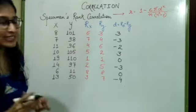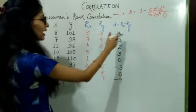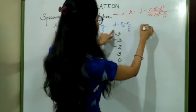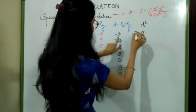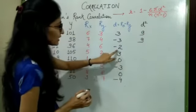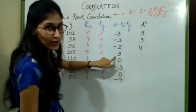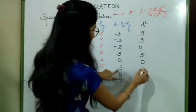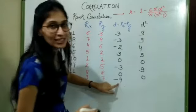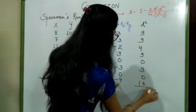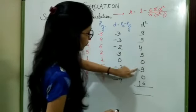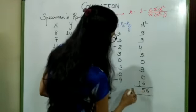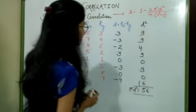Now find D²: 3²=9, (−3)²=9, (−2)²=4, 3²=9, 0²=0, (−3)²=9, 0²=0, (−4)²=16. Adding these: 9+9+4+9+0+9+0+16 = 56. So Σd² = 56, and N = 8.